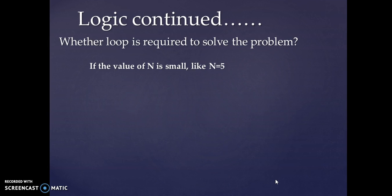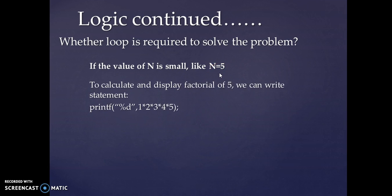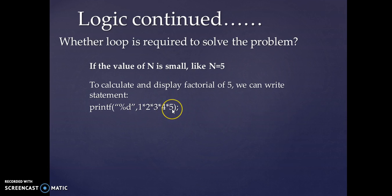Let's continue with the logic. The first point is about whether a loop is required. Let's take n as 5, a smaller value, and calculate the factorial. To calculate and display it we write a printf statement: 1 multiplied by 2 multiplied by 3 multiplied by 4 multiplied by 5. This will display the factorial of 5.